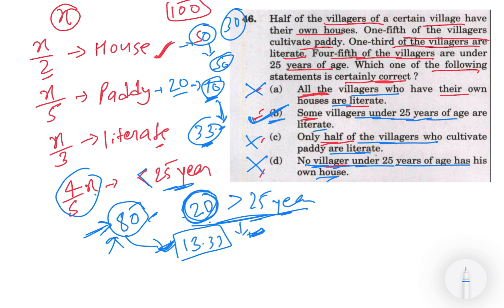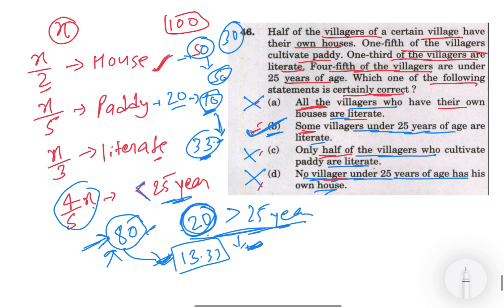Isse se aap se hamara statement B sahi ho gaya. So pehle maine jo trick bataya tha ki agar aapke paas some hai, directly aap aisa question meh B mark kar sakte ho. Jahan some hai, jahan pe definiteness ka scope nahi hai - some ho. Agar jahan all ho, none of the above ho, yeh some answer generally nahi hota hai. So aap dono tarike se maine aapko samjha diya hai, so you are smart enough to choose ki kaun sa way jaana hai depending on how much time you have left in the examination, so accordingly you can.